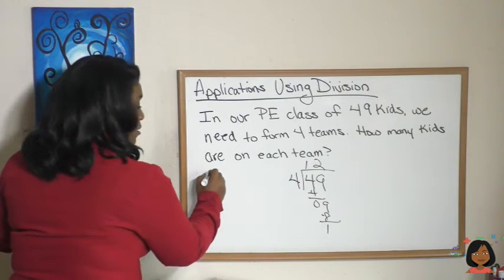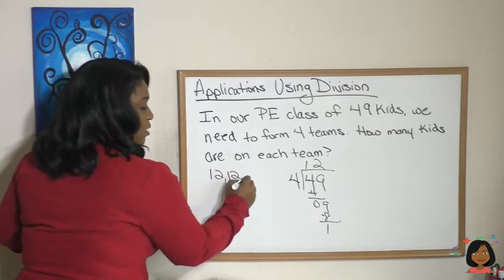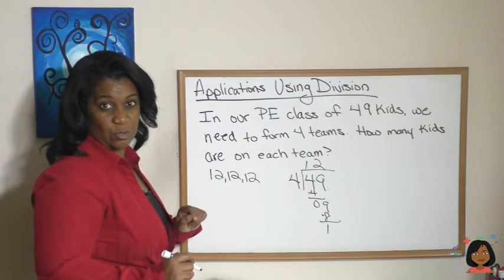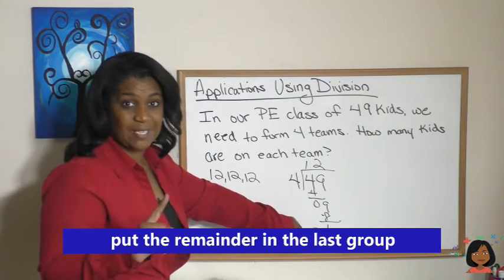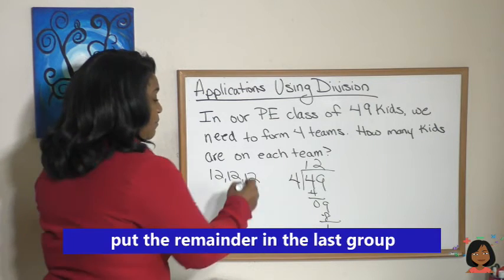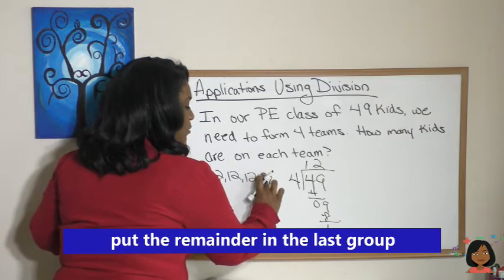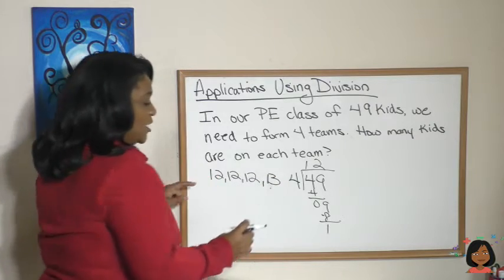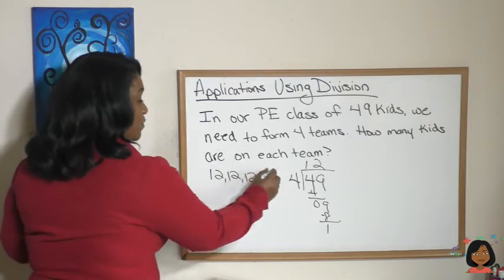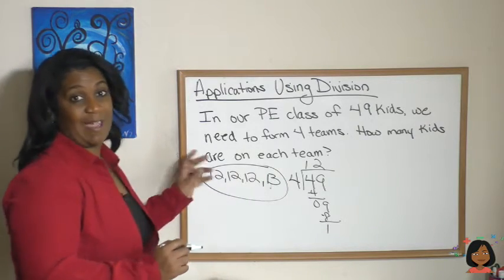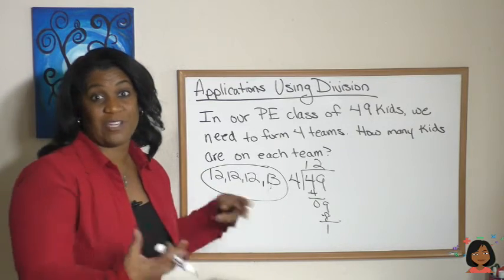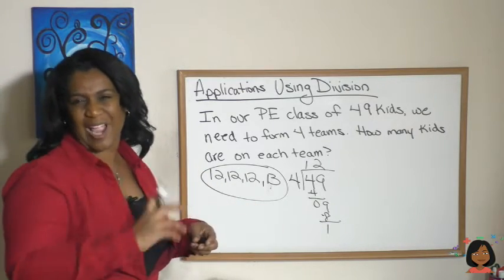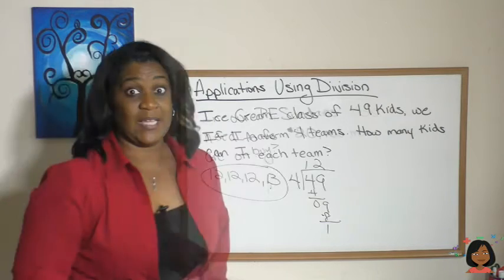Teams one, two, and three are all going to have 12 students, but this one remaining student is going to go onto the fourth team, which means that team is going to have 13 kids. So we use the remainder concept, but we take that remainder child and put them on the other team.